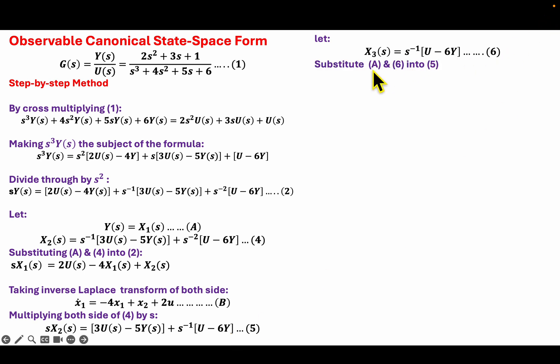Then I will substitute A, which is this equation, and 6 into 5, which is this equation, in order to obtain this equation. So taking the inverse Laplace transform of both sides again, I will obtain equation C.